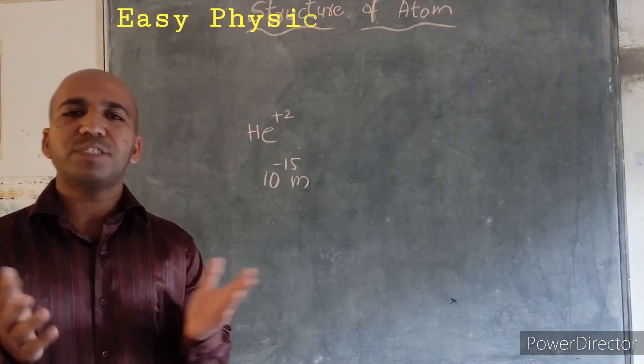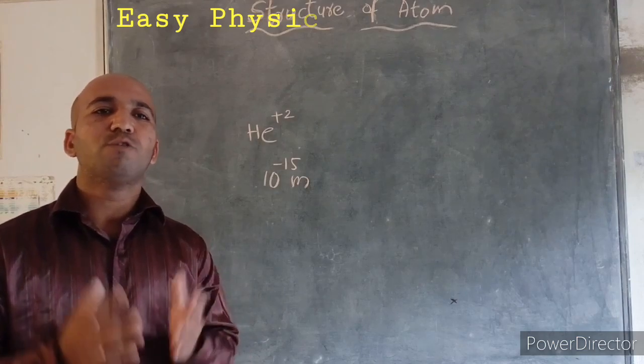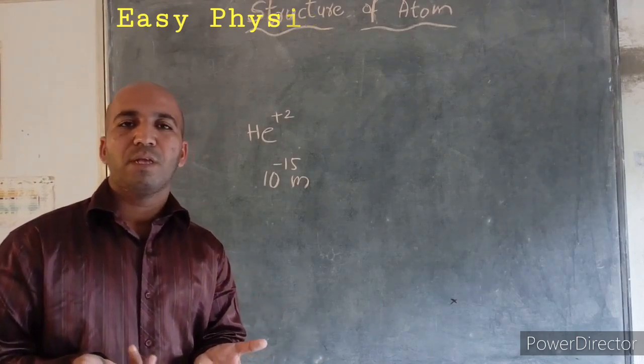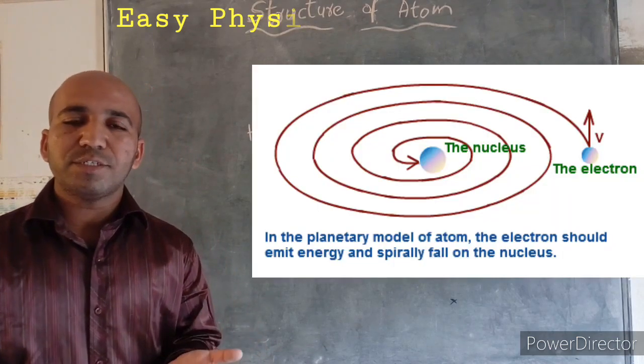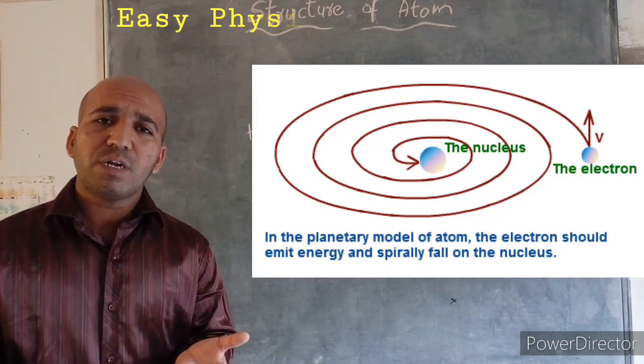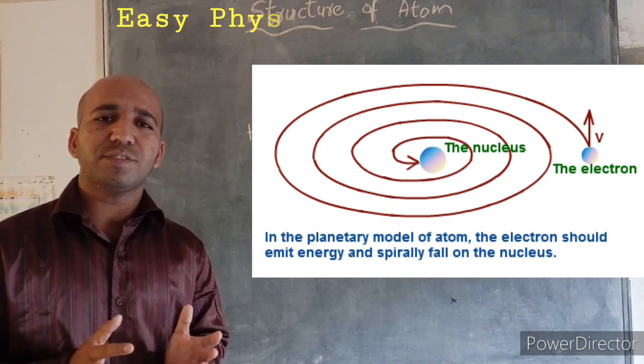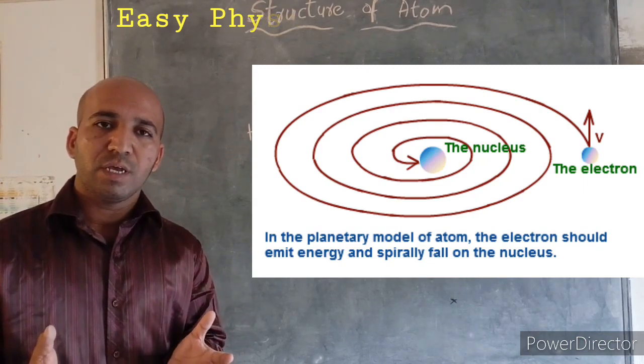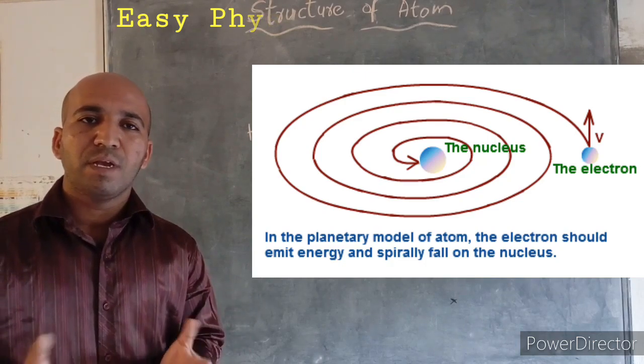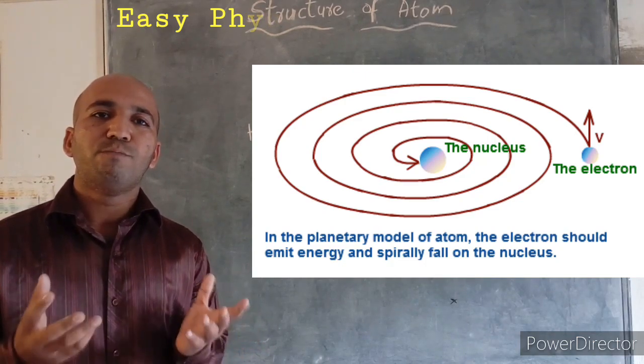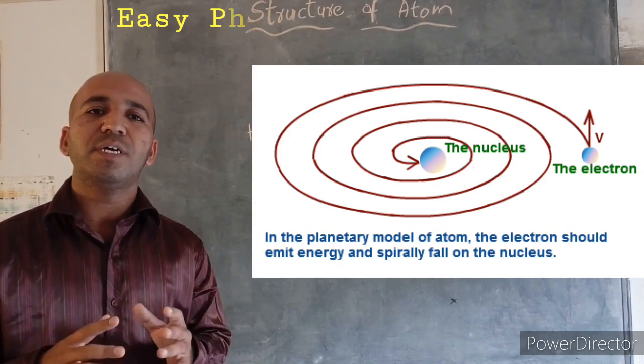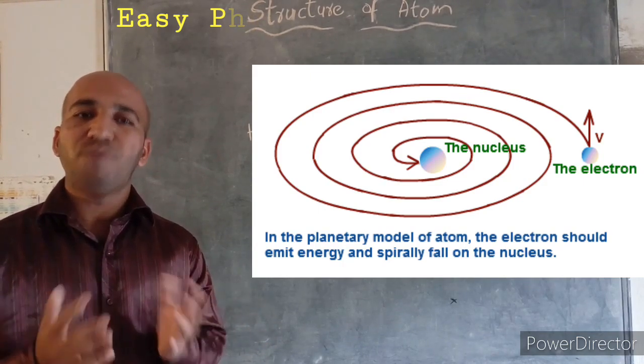And there are some defects in Rutherford's atomic model. So he told that electrons are revolving around the nucleus continuously. But actually, as per the theory, electrons unable to move around the nucleus continuously without any centrifugal and centripetal forces.